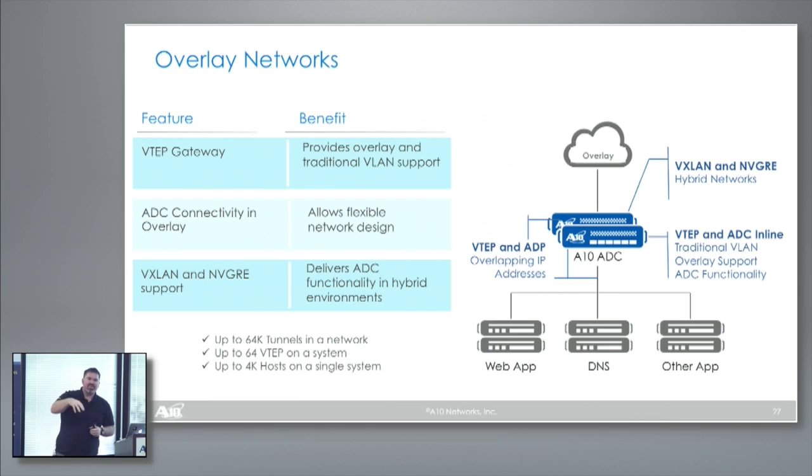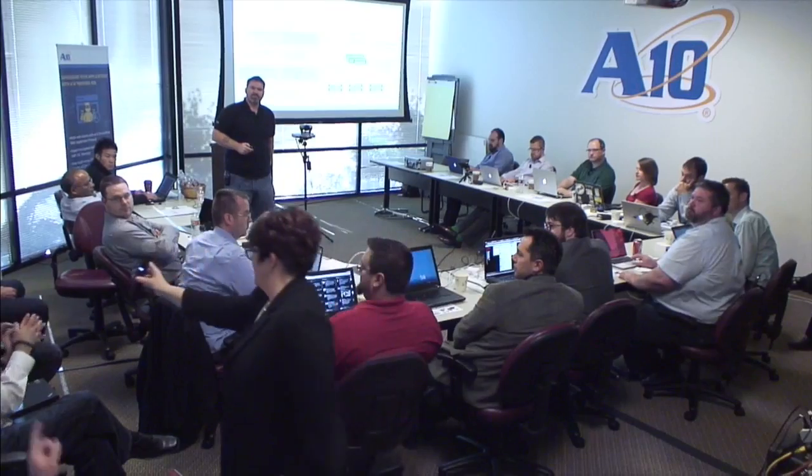I'm giving you a central point of control for your services. On the unicast question — we don't do multicast currently. For VTAP-to-MAC mappings, we support static mappings from a controller or from your organization. We also do dynamic discovery and multi-unicast — so if we know the VNI-to-VTAP mapping, we can do multi-unicast for discovery.